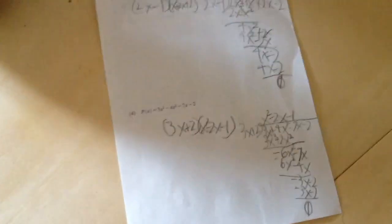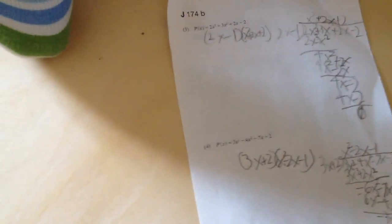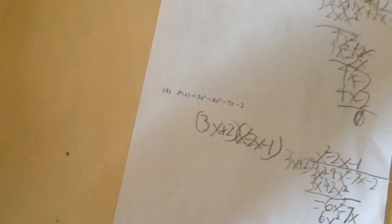How did you get 3x plus 2 as one of the factors? You used the factor theorem, right? Yes, because it was negative 2 over 3. We had to minus that, so the negative 2 over 3, we took away the 3, and then it was just plus 2.